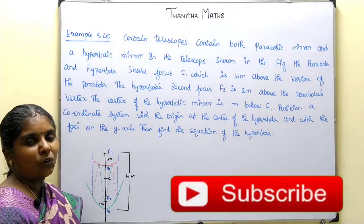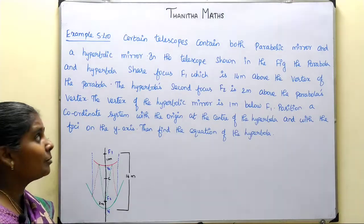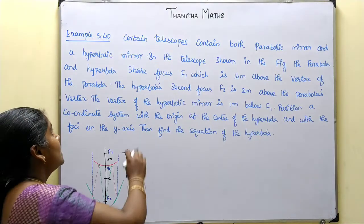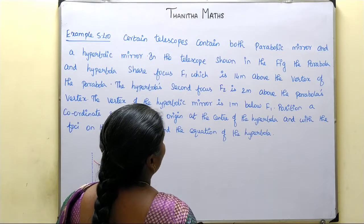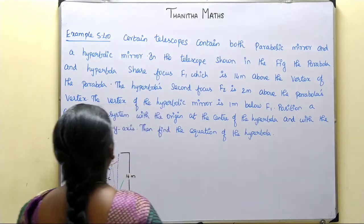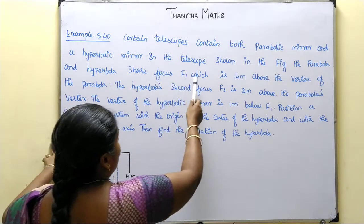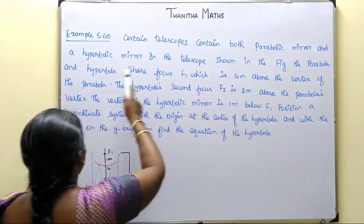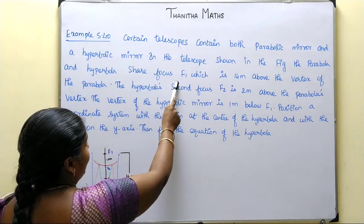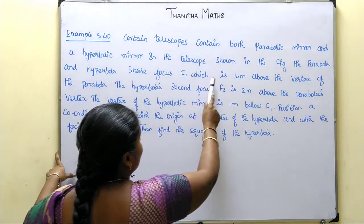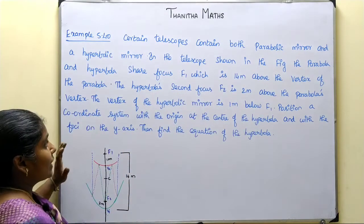Welcome students. I am going to show you example 5.40. Certain telescopes contain both a parabolic mirror and a hyperbolic mirror. In the telescope shown in the figure, the parabola and hyperbola share focus f1, which is 14 meters above the vertex of the parabola.